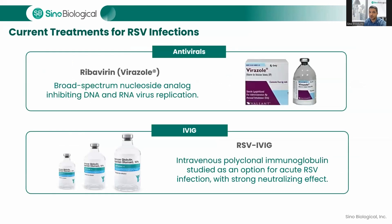Other treatment options include antivirals such as ribavirin, a broad-spectrum nucleoside analog that effectively inhibits the replication of both DNA and RNA viruses including RSV, often administered via inhalation or intravenous routes. Ribavirin has been used for severe RSV infections, especially in high-risk patients. IVIG, or intravenous polyclonal immunoglobulin, is another treatment option studied for acute RSV infections, involving pooled immunoglobulins from donors with high levels of RSV-specific antibodies. RSV-IVIG has demonstrated a strong neutralizing effect against RSV.